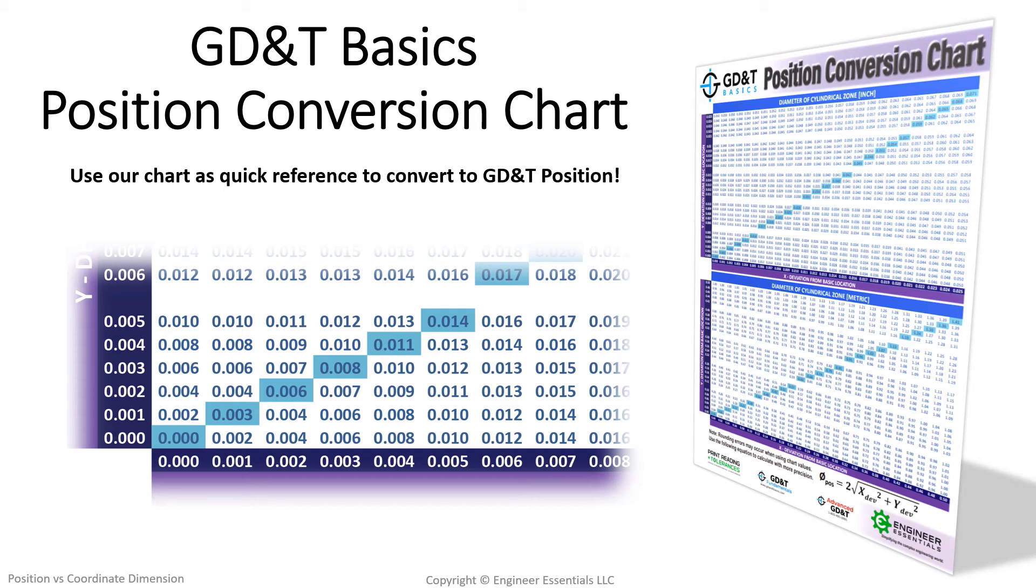This chart is a tabulated translation of the Pythagorean theorem. There are two tables, one for metric units and one for English units. To convert a drawing, simply look up the maximum x-deviation and the maximum y-deviation, and find the value where the row and the column intersect, and this is the total diametric deviation converted from the coordinate dimension values. This value would be the positional tolerance value found in the feature control frame.